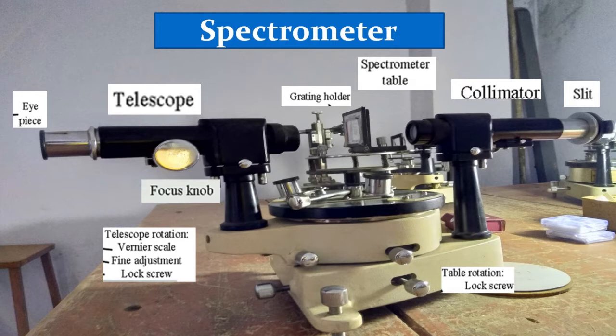The collimator is an arrangement to produce a parallel beam of light. It consists of a long cylindrical tube with a convex lens at the inner end and a vertical slit at the outer end of the tube. The distance between the slit and the lens can be adjusted such that the slit is at the focus of the lens. The slit faces the source of light, and its width can be adjusted. The collimator is rigidly fixed to the base of the instrument.